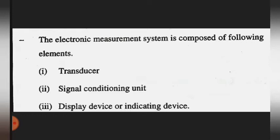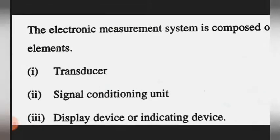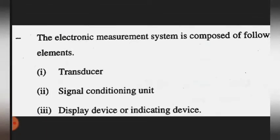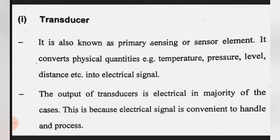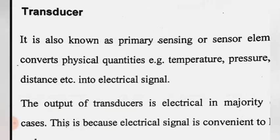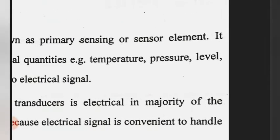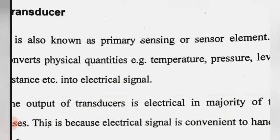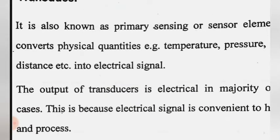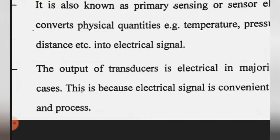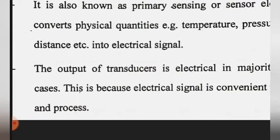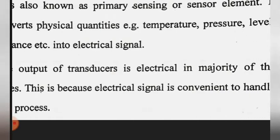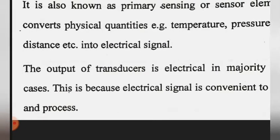From the notes: the electronic measurement system is composed of the following elements — transducer, signal conditioning device, and display or indicating device. The transducer is also known as the primary sensing or sensor element. It converts physical quantities such as temperature, pressure, level, and distance into electrical signals. The output of the transducer is electrical in the majority of cases, because electrical signals are convenient to handle and process.